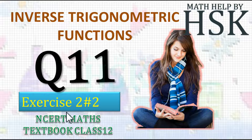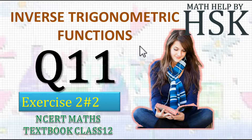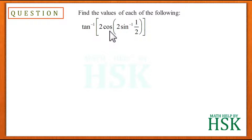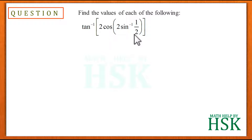Taking question number 11 of exercise 2.2 from the chapter Inverse Trigonometric Functions. The question asks us to find the value of the expression: tan⁻¹(2cos(2sin⁻¹(1/2))).